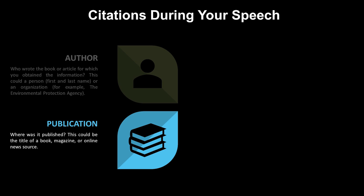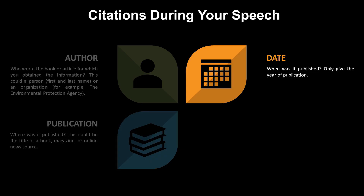The second piece of information to always give is the publication title — where was this information published? This could be the title of a book, a magazine, or an online source. It's important because different sources have different amounts of credibility. Publishing something on a personal website isn't as credible as publishing in the New York Times or a refereed journal.